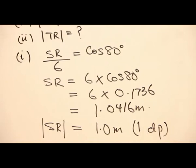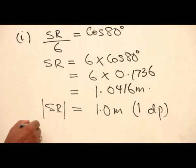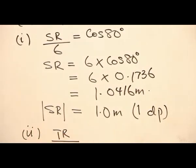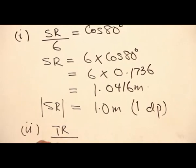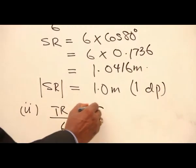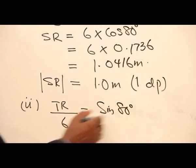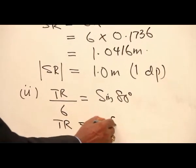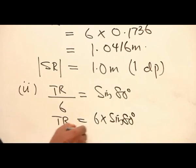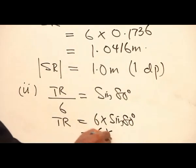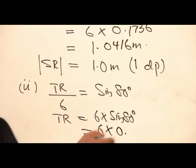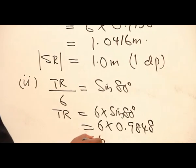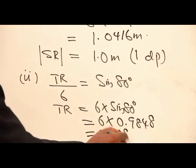Then, the second one is asking for the value of TR. TR over 6 is equal to sin of 80 degrees. This means that TR is equal to 6 times sin 80 degrees. In a similar way, this is 0.9848, and that will give you the value 5.908.